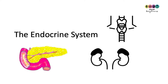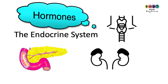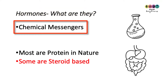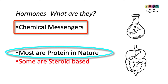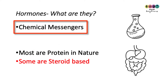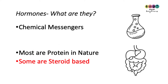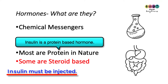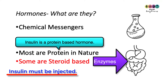This video is all about the endocrine system. For those of you learning it for the first time, it's all to do with hormones and the glands that secrete or produce them. A hormone is a chemical messenger. Most of them are proteins, but some are steroid-based — for example, the sex hormones. An important protein-based hormone is insulin, and insulin must be injected. It cannot be taken orally through the mouth because the digestive enzymes would break it down.